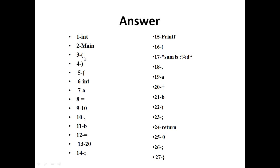Main, left parenthesis, right parenthesis, brace, int — next line: int, a, equal to, 10 as a constant, comma as separator, variable name b, operator equal to, 20 as constant, semicolon as separator, printf as a keyword, left parenthesis, double quote — 'sum is %d' is treated as a single word — comma, a, plus operator, b variable name, right parenthesis, semicolon, return keyword, zero constant, semicolon, closing brace. Total: 27 tokens.